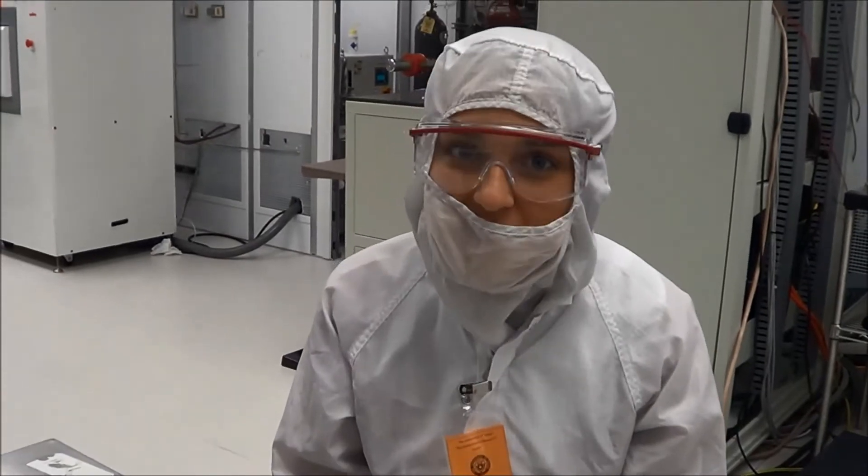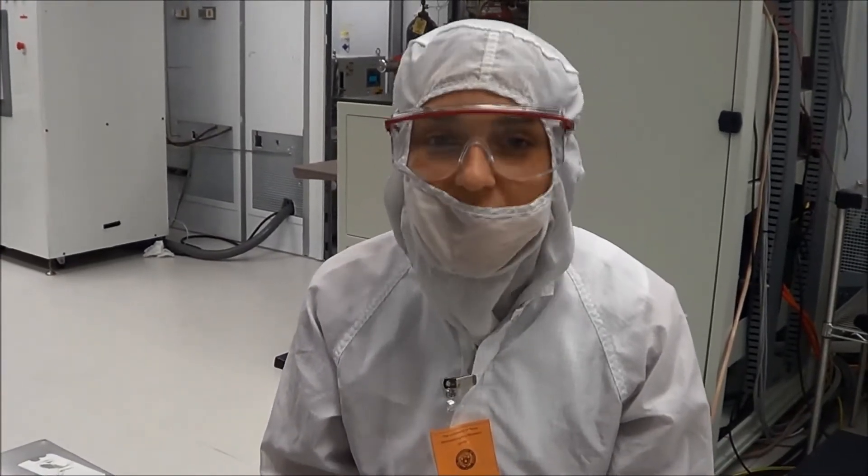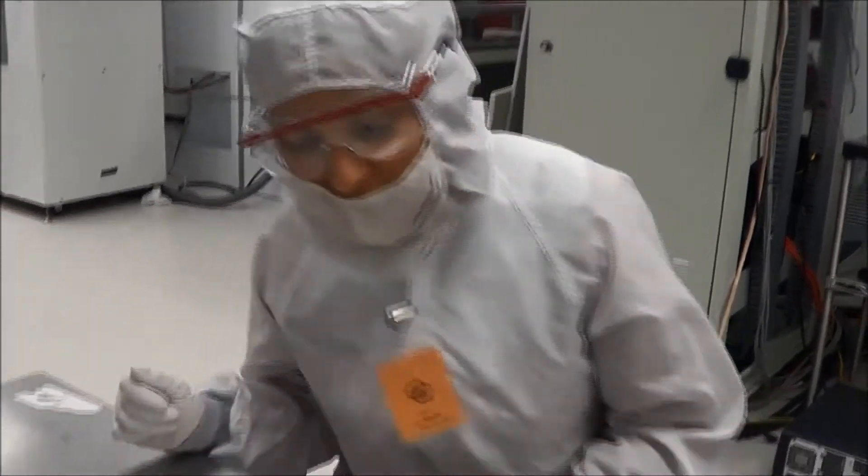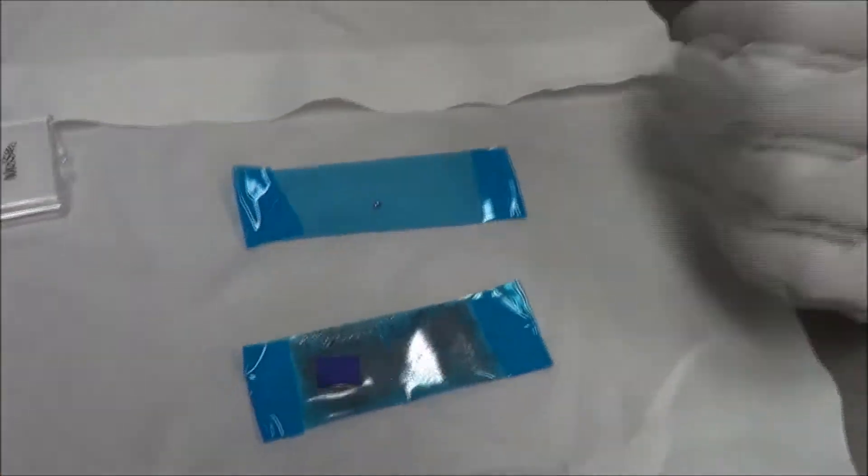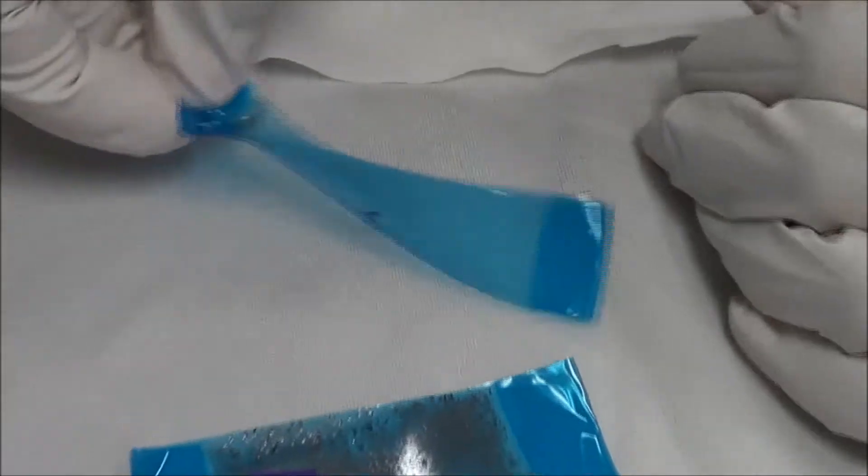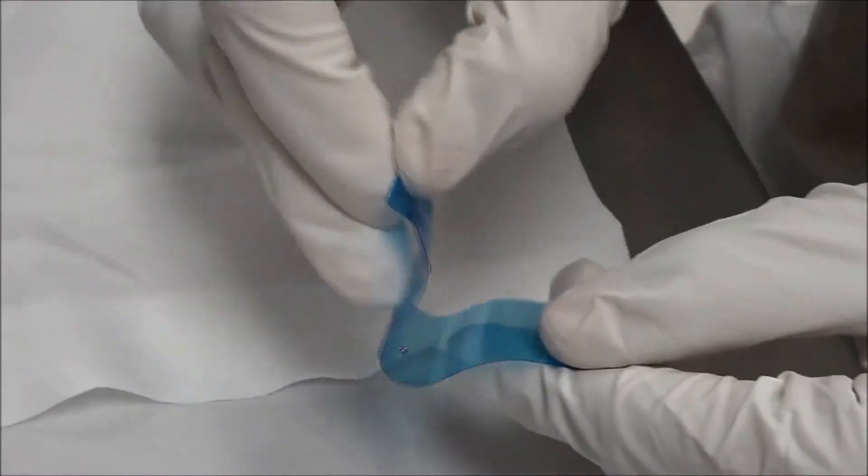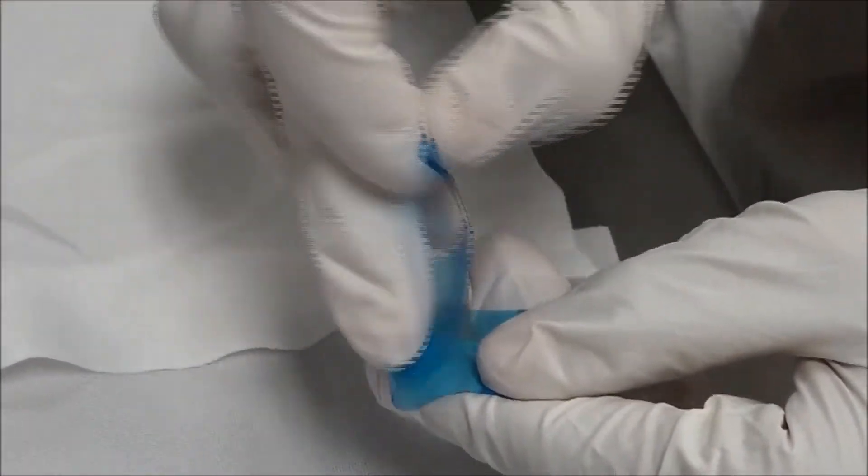In order to create a heterostructure, you need to achieve monolayer with each of your TMDs. To achieve monolayer, you take a small amount of bulk, place it on blue cleanroom tape and exfoliate simply by separating it layer by layer. Like this.